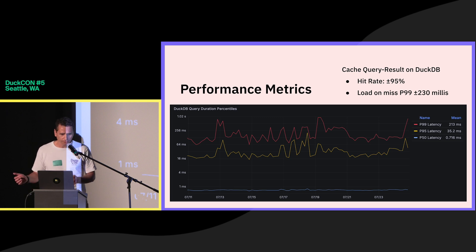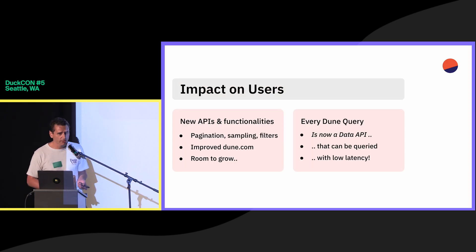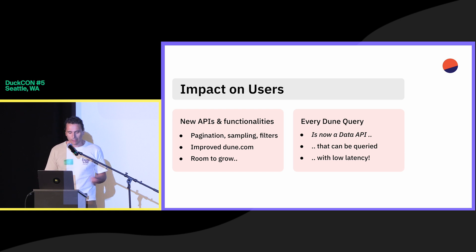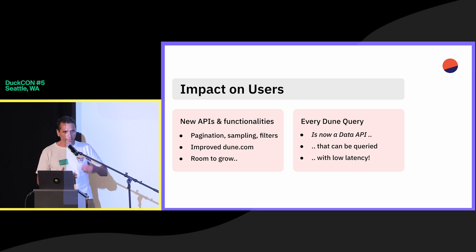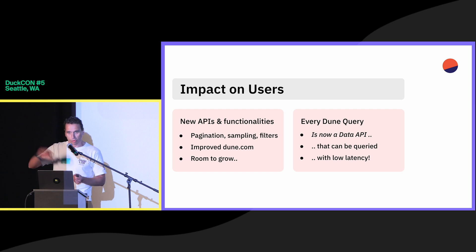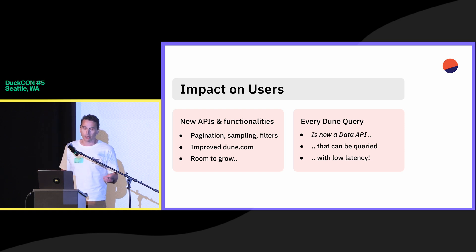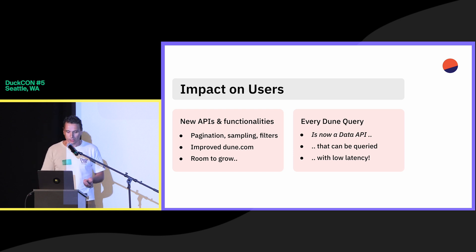The impact on users is that they got their wishes granted — they have the feature they wanted and we support much larger results. We've also improved dune.com because we rebuilt the dune.com backend to use DuckDB. We use sampling a lot because for all these charts, we don't need 20 million rows to plot a line chart — we just need about 8,000 pixels. Now every single query on Dune is also a data API and can be queried cheaply and easily with low latency.